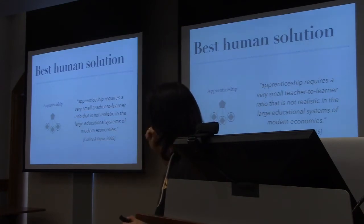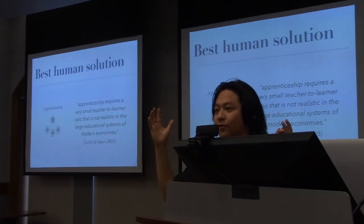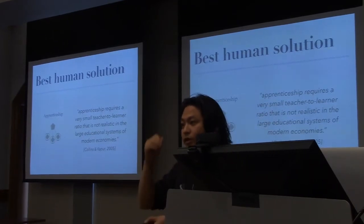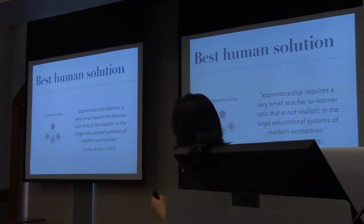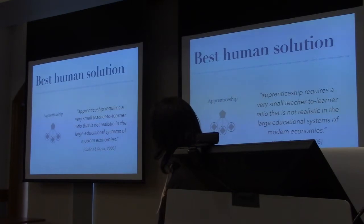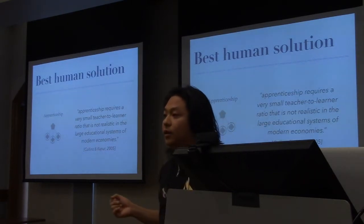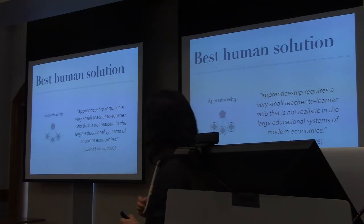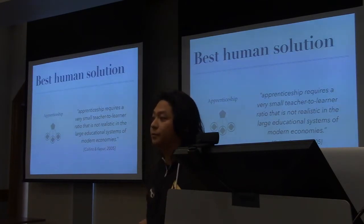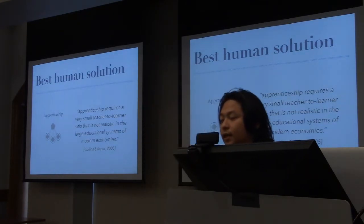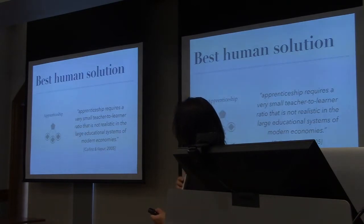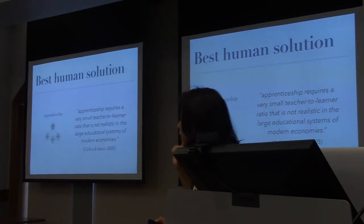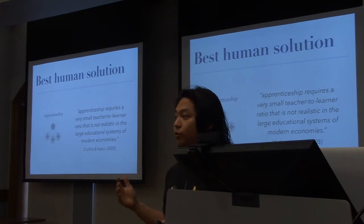Unfortunately, as Alan Collins — who is kind of the godfather of cognitive apprenticeship, or apprenticeship of the mind for cognitive skills like doing research — he says that apprenticeship requires a very small teacher-to-learner ratio that's just not realistic in large educational systems. So we're already seeing this constraint: we could try to do this great model of apprenticeship, but we're constrained in how many students we can train.